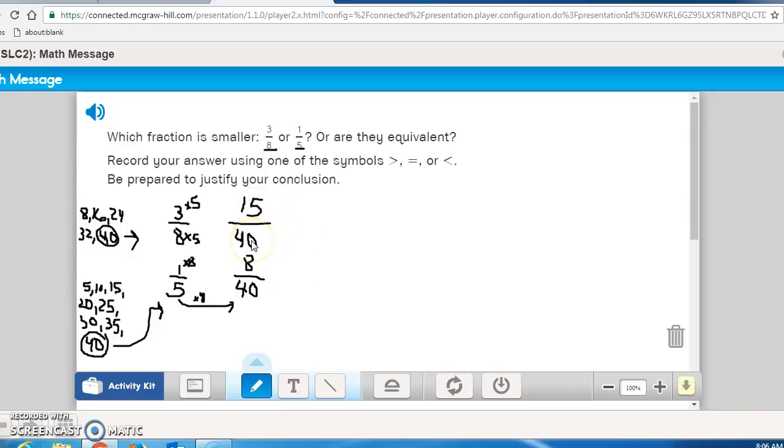Now it's easy to compare the two. 15 out of 40 is definitely bigger than only 8 out of 40. So that tells me that 3 eighths is greater than, because we converted it, 15 fortieths, the 1 fifth that it asked. How did I justify my conclusion? Well, I compared 3 eighths and 1 fifth, I found my common denominator, I converted them into equivalent fractions for each fraction, which then was easy to compare, to decide which one was greater than the other one.